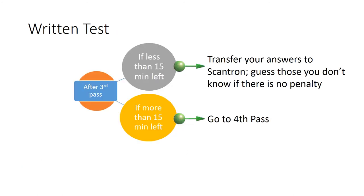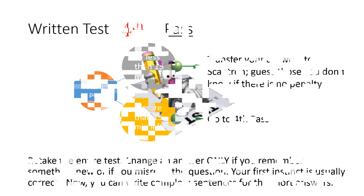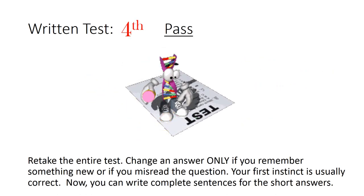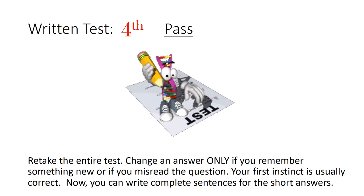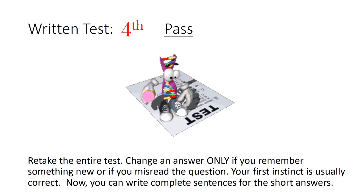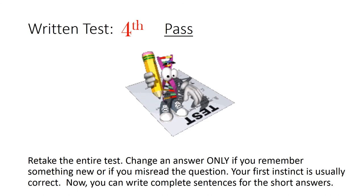After the third pass, if less than 15 minutes left, transfer your answers to scantron. Guess those you don't know if there's no penalty. After the third pass, if more than 15 minutes left, go to the fourth pass. Fourth pass: Retake the entire test. Change an answer only if you remember something new or if you misread the question. Your first instinct is usually correct. Now you can write complete sentences for the short answers.